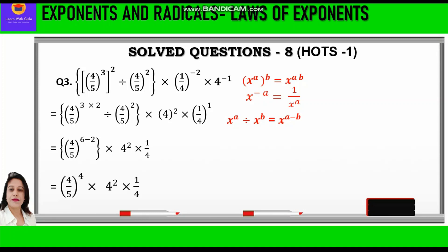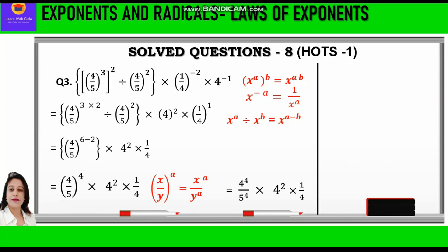We apply the law: x upon y, whole raised to power a, equals x raised to power a upon y raised to power a. Distributing the power 4 between numerator and denominator, we write 4 raised to power 4 upon 5 raised to power 4, into 4 squared, into 1 by 4. We then apply the product of powers law — add powers for multiplication — and the quotient of powers law — subtract powers for division — combining the powers of 4 in the numerator and denominator.